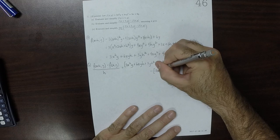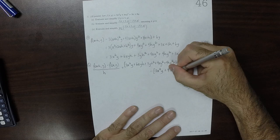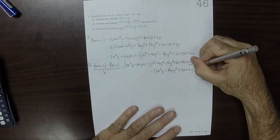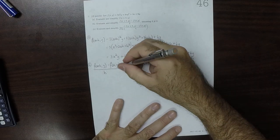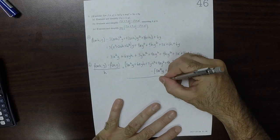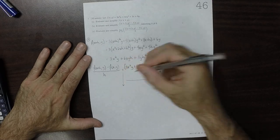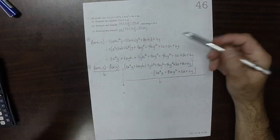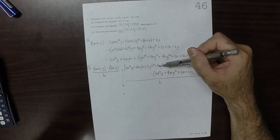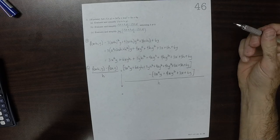And then minus all of that. 3x squared y plus 4xy squared plus 3x plus 6y. And then all of that is over h. So now we've got a lot of cancellation that occurs. 3x squared cancels with that, 4xy cancels with that 4xy, 3x cancels with that 3x, 6y cancels with that 6y.